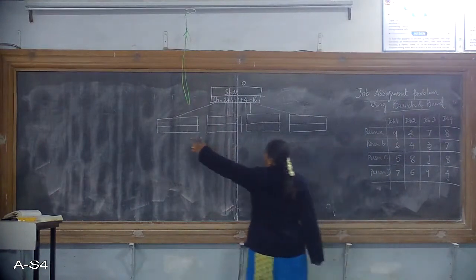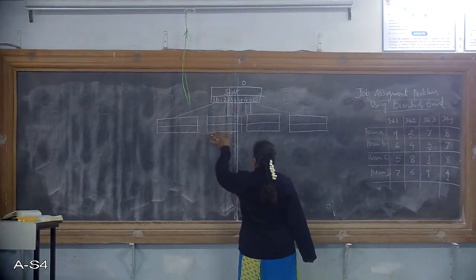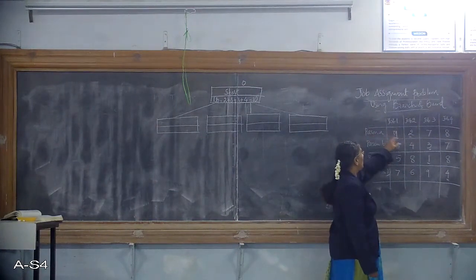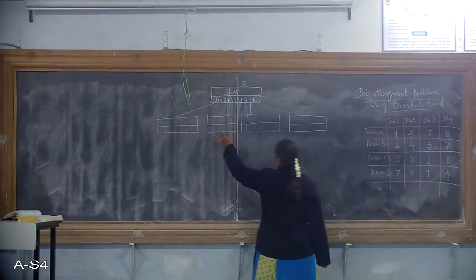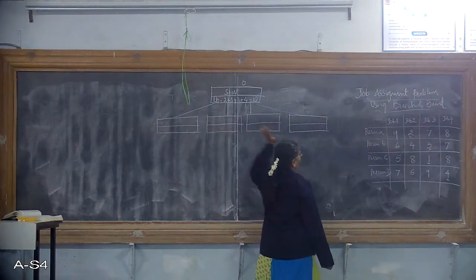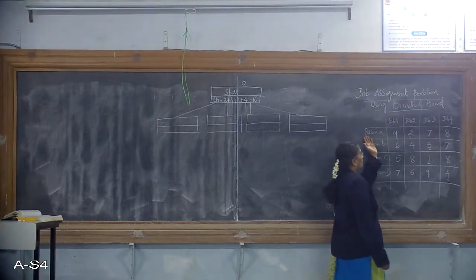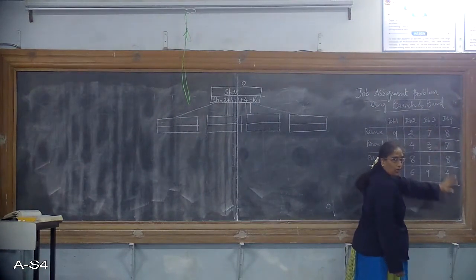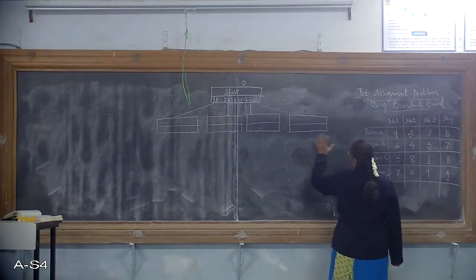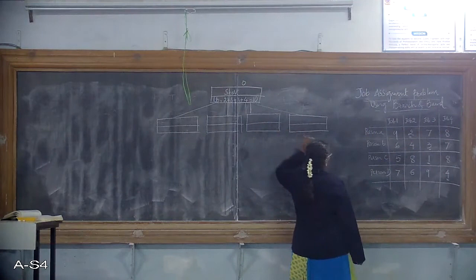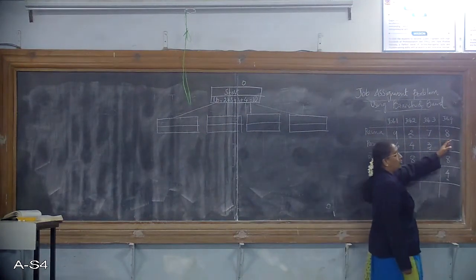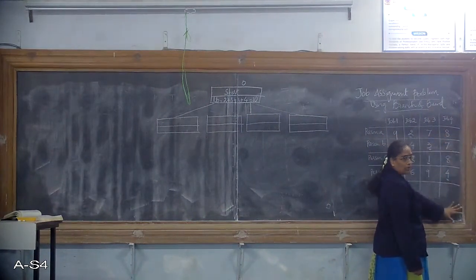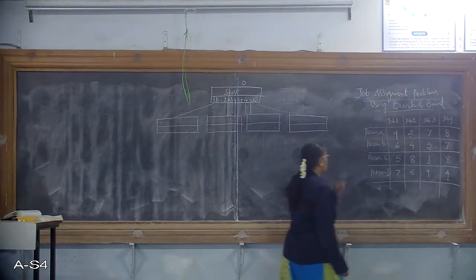For person A, when job J1 is assigned, we calculate the lower bound value for the first node. The second node is when job J2 is assigned to person A. The third node is when job J3 is assigned to person A, and the fourth node is when job J4 is assigned to person A.